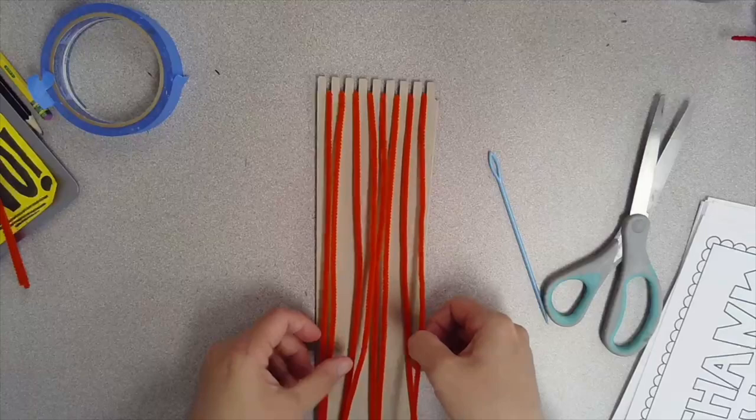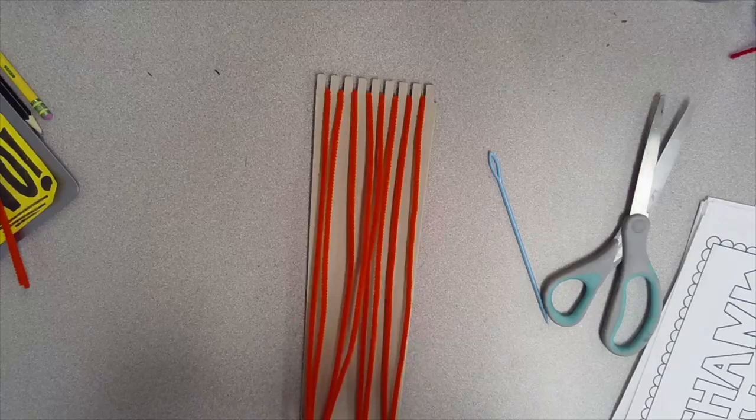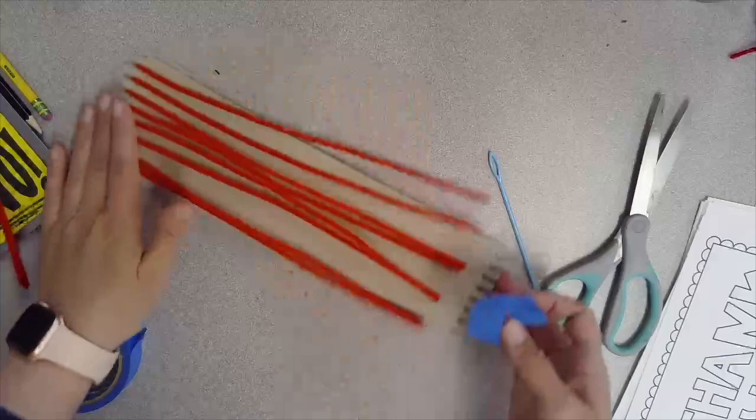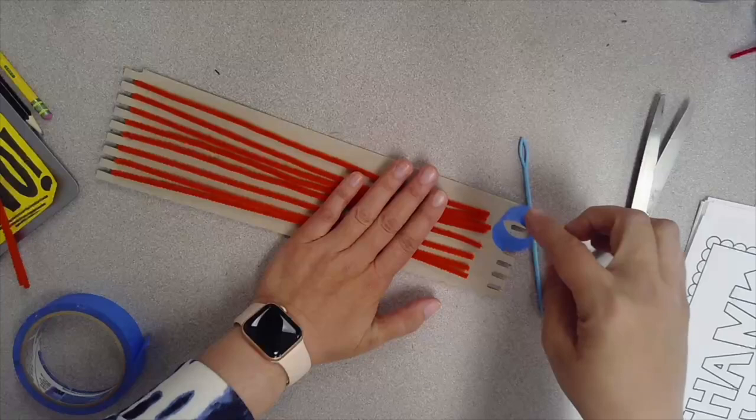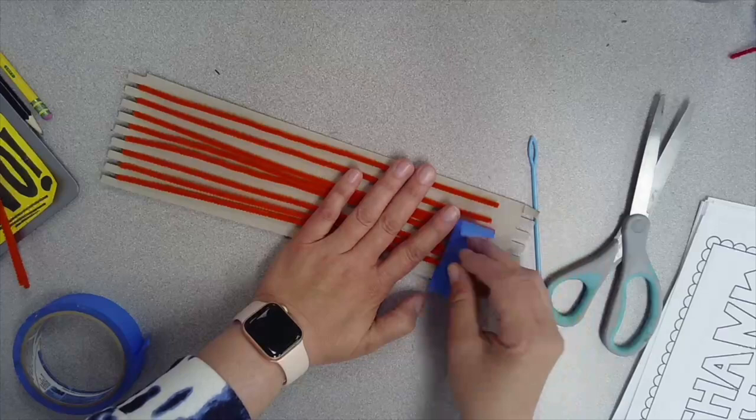For this next part you might need a friend to help you. You'll have to make sure that the strands of pipe cleaners don't overlap. You want to keep them separate. We're going to tape them down so that they don't move. Have a piece of tape ready. Have a friend or you push the pipe cleaners down, spacing them out so that they're not on top of each other or overlapping or crossing, and then lay a piece of tape on top of them to keep them down.